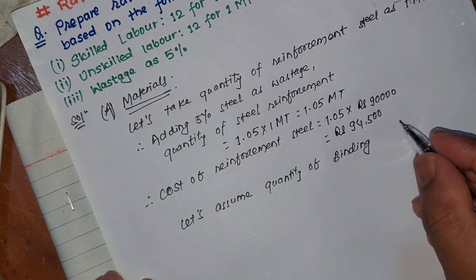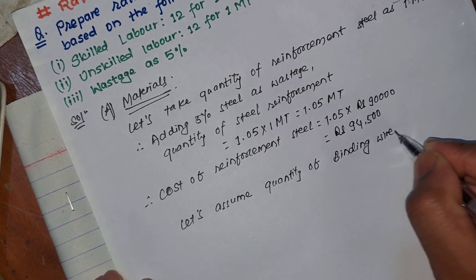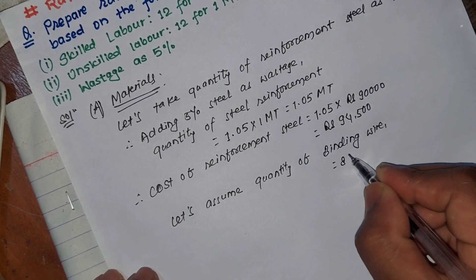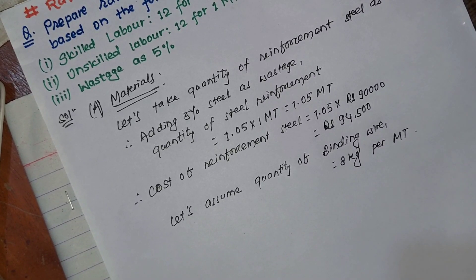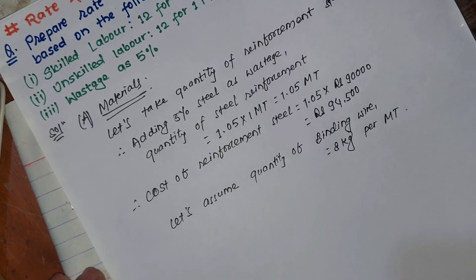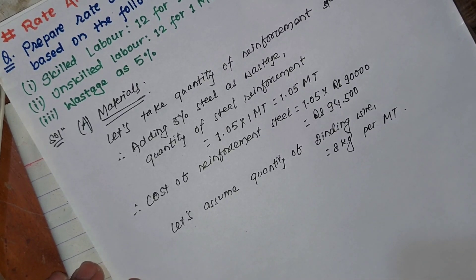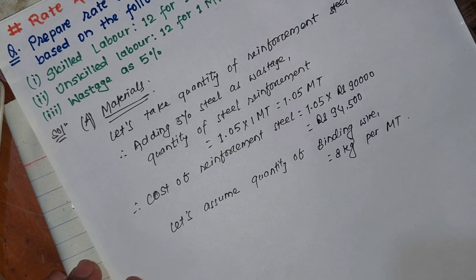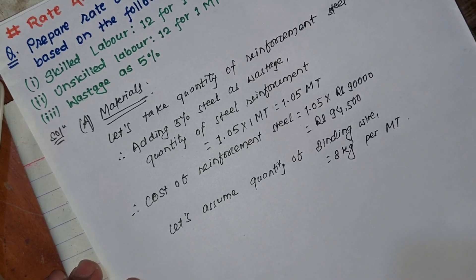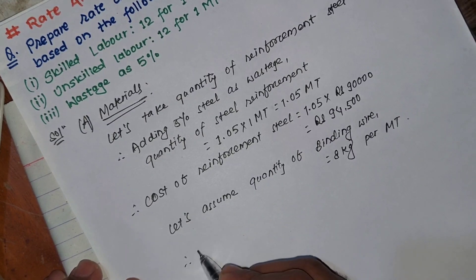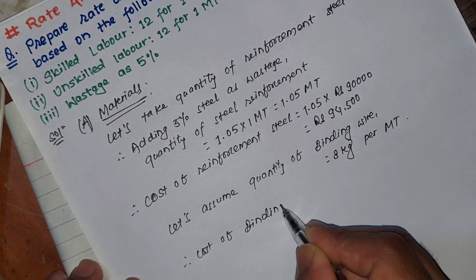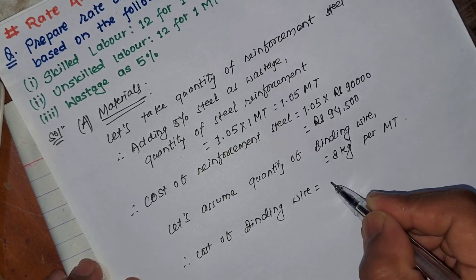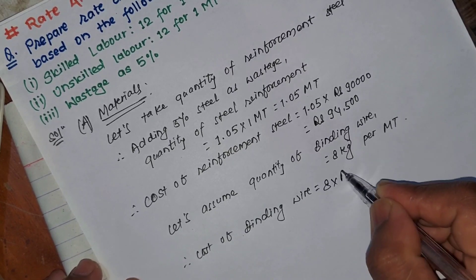Binding wire is used as binding wire. The binding wire is 8 kg per metric ton. Therefore, cost of binding wire is equal to quantity into rate.